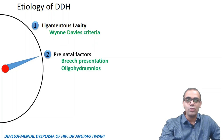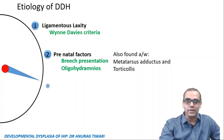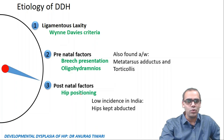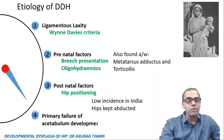The next factor is prenatal, which includes breech presentation and oligohydramnios. If the child has breech presentation or the mother has oligohydramnios, they will develop DDH. DDH is also associated with metatarsus adductus and torticollis. The third factor is postnatal, decided by hip positioning. In western countries children are kept with hips in extension and adduction, increasing DDH risk, whereas in India there is lower incidence because hips are kept in abduction and flexion. The last factor is primary failure of acetabulum development.